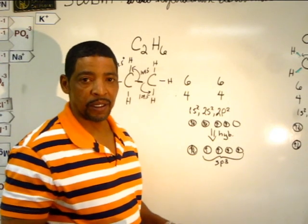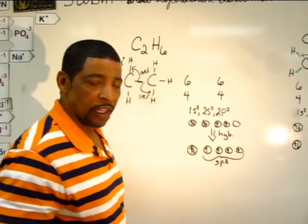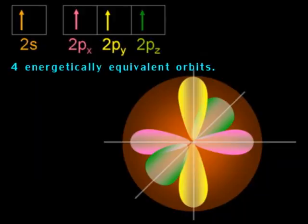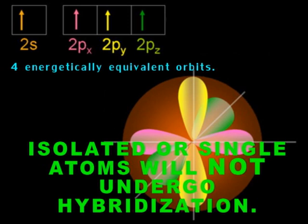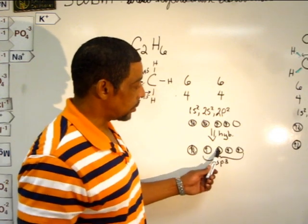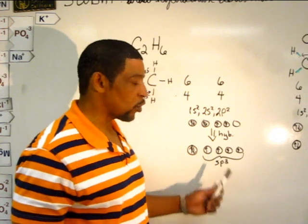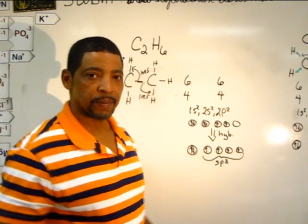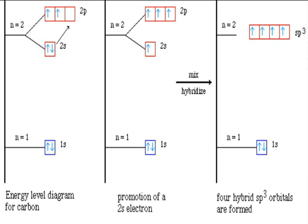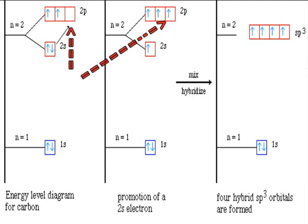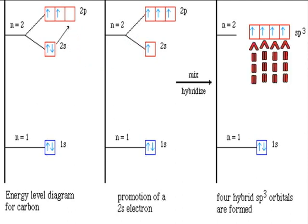However, carbon may undergo hybridization — in this case, sp3 hybridization — where the 2s orbital will blend with all three of the 2p orbitals. During the process, four equivalent orbitals are produced, where the electrons in each of the orbitals will possess the same energy. One of the electrons is promoted from the 2s subshell to an orbital in the 2p subshell. The end result will be four orbitals, all possessing the same energy.